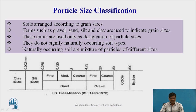This is the IS classification as per IS 1498-1970. Based on the soil particle size, the classification is made. Particles finer than 0.002 mm are called clay. From 0.002 mm to 0.075 mm, it is called silt. From 0.075 mm up to 4.75 mm, this soil is basically sand. Within sand, further division is made: fine-grained sand up to 0.425 mm, medium-grained sand up to 2 mm, and then coarse-grained sand.